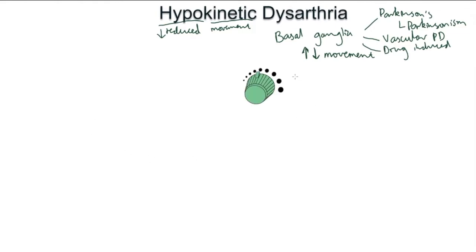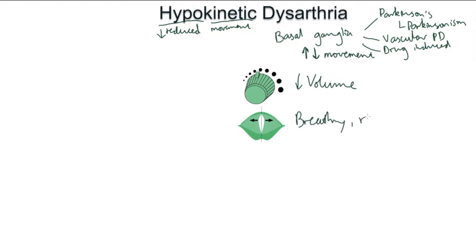The first feature is reduced volume — the absolute hallmark of hypokinetic dysarthria. Because the signal's not coming strongly enough from the brain, the voice is there but not loud enough. The second is dysphonia: a very breathy, rough voice — particularly breathy. There is vocal fold bowing in Parkinson's so closure is not as strong, due to the decreased amplitude of movement and decreased force of bringing the vocal folds together.